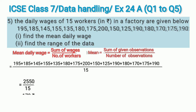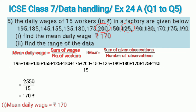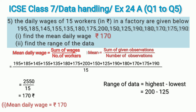So mean wage equals 2550 divided by 15, which on division comes to 170 rupees. The mean daily wage is 170 rupees. For the range, we look for the lowest and highest wages. The lowest is 125 and the highest is 200. Range equals highest minus lowest, that is 200 minus 125, which comes to 75. So the range of data is 75 rupees.